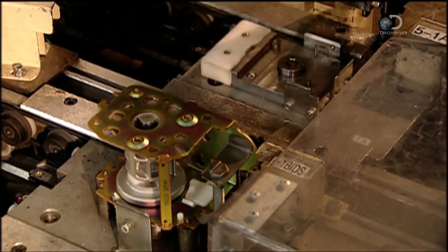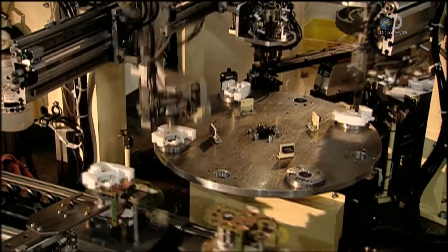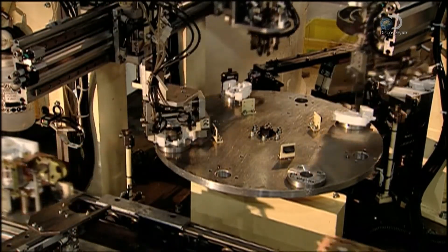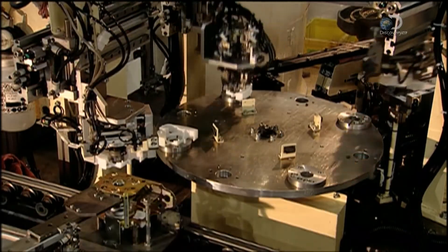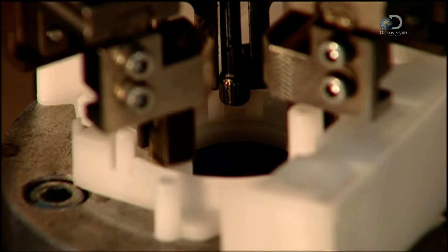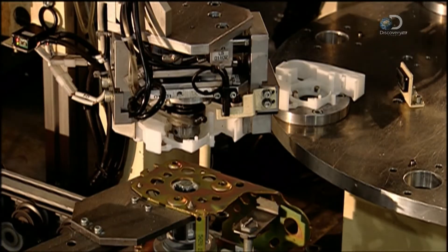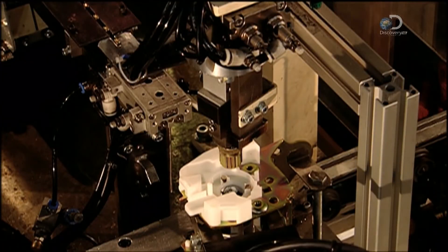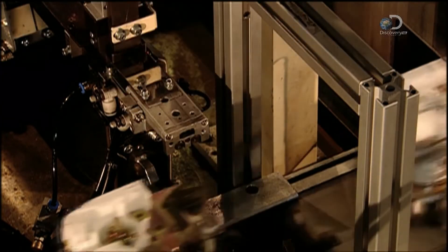The next robot assembles the pre-tensioner mechanism. This pulls the webbing back sharply, tightening any slack. It kicks in only in the event of a crash. The sudden deceleration on impact triggers sensors which signal the airbag control module to send an electrical charge to the pre-tensioner. This charge sets off a tiny explosion that takes up the slack in the belt.